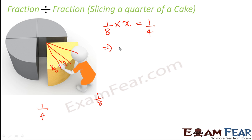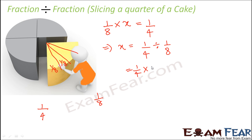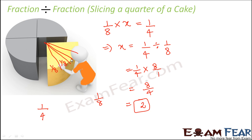So x equals one by four divided by one by eight. To divide, we multiply the reciprocal: one by four multiplied by eight by one, which gives eight by four. Eight by four equals two, meaning this portion should be cut into two slices.